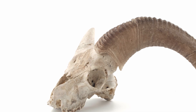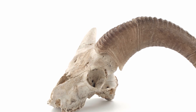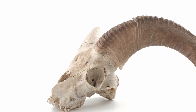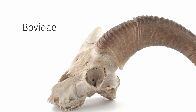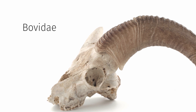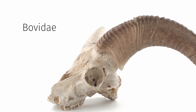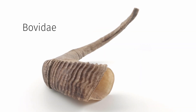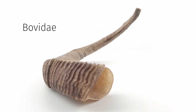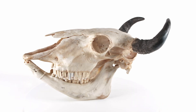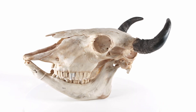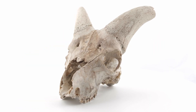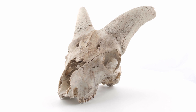The two families of this order are Bovidae and Cervidae. Bovidae, or bovids, have horns, which are a bone core covered in a permanent sheath of keratin. Examples are bison, bighorn sheep, Dall sheep, and mountain goats.